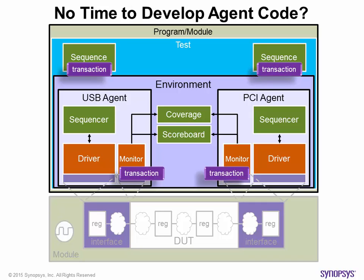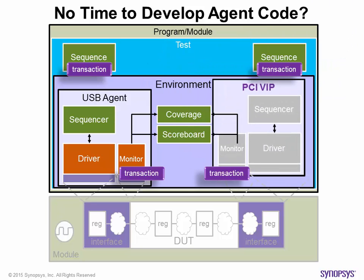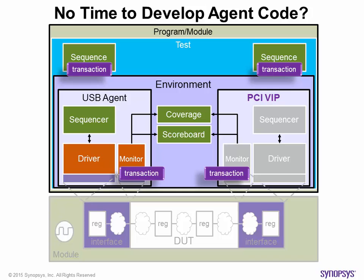As mentioned earlier, an agent is interface specific and independent of the device under test. The beauty of this approach is that the agent becomes highly reusable across projects. One benefit of this reusability is that there are multiple vendors, including Synopsys, that sell standard agents as verification IPs. So one can simply buy an off-the-shelf VIP from a trusted vendor to shorten the verification development cycle. Many vendors also ship a set of predefined stimulus to help you get started with verifying your device under test.